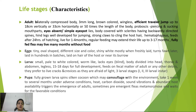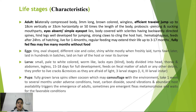Flea adults have piercing and sucking proboscis; eyes are absent or present only as simple eye spots. Sclerites are backwardly directed like spines. The hind leg is well developed for jumping, with strong claws to hold the host's hair. They are hematophagous, feeding after 24 hours of hatching and living one to four months normally; with regular feeding they can live 3 to 17 months. A fully fed flea may live many months without food.